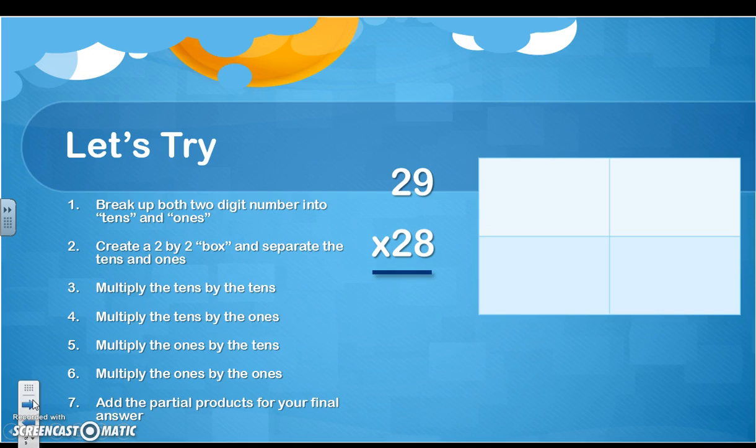Let's try another one. So again, we're going to break up 29 and 28 into 10s and 1s. So 29 is equal to 20 plus 9. 28 is equal to 20 plus 8. Okay, so we did that. Here's my box.